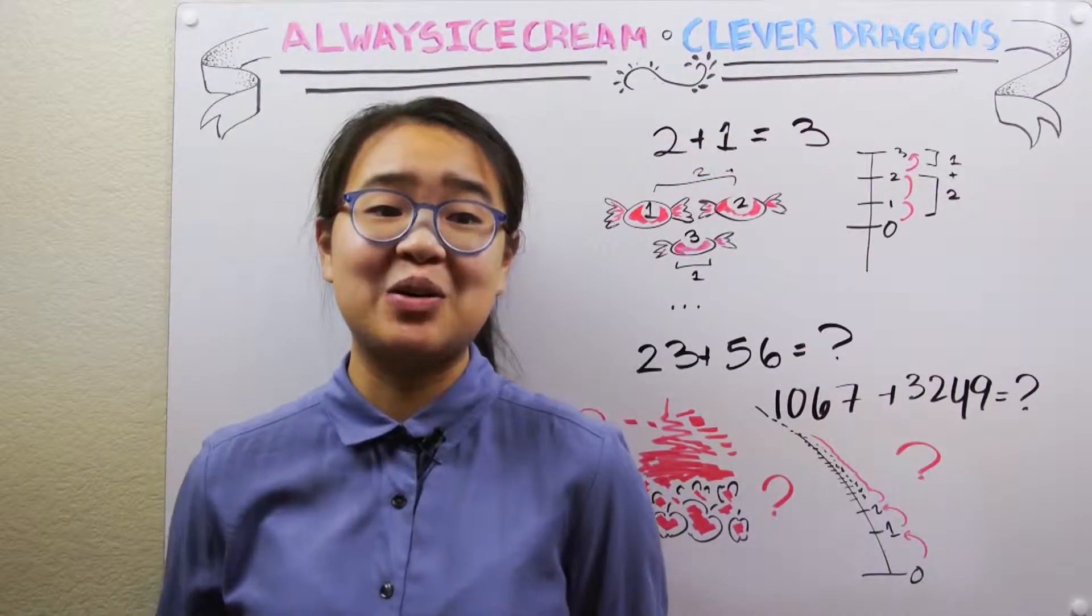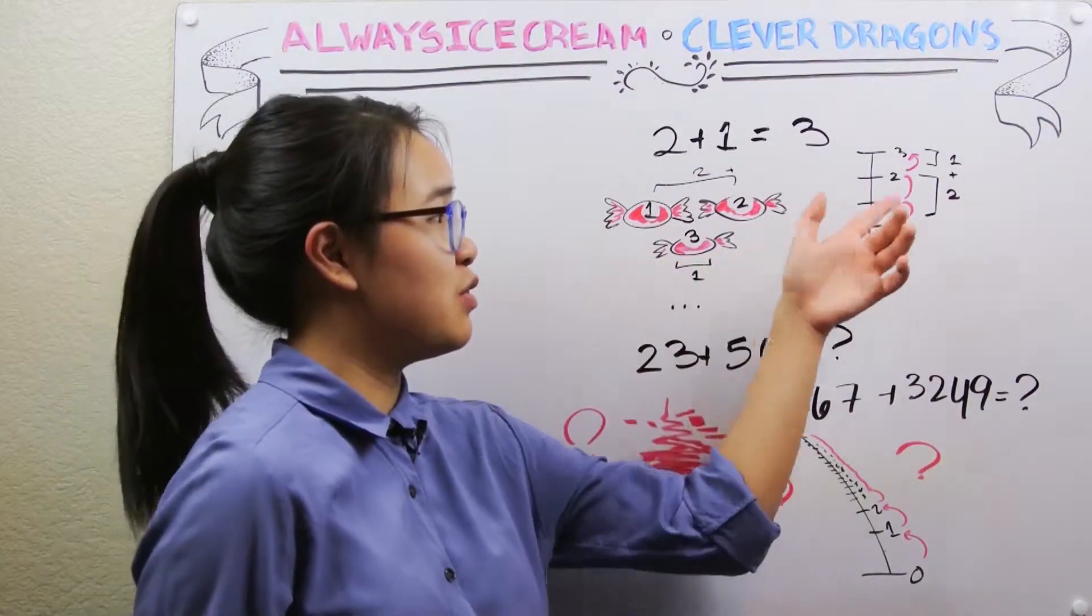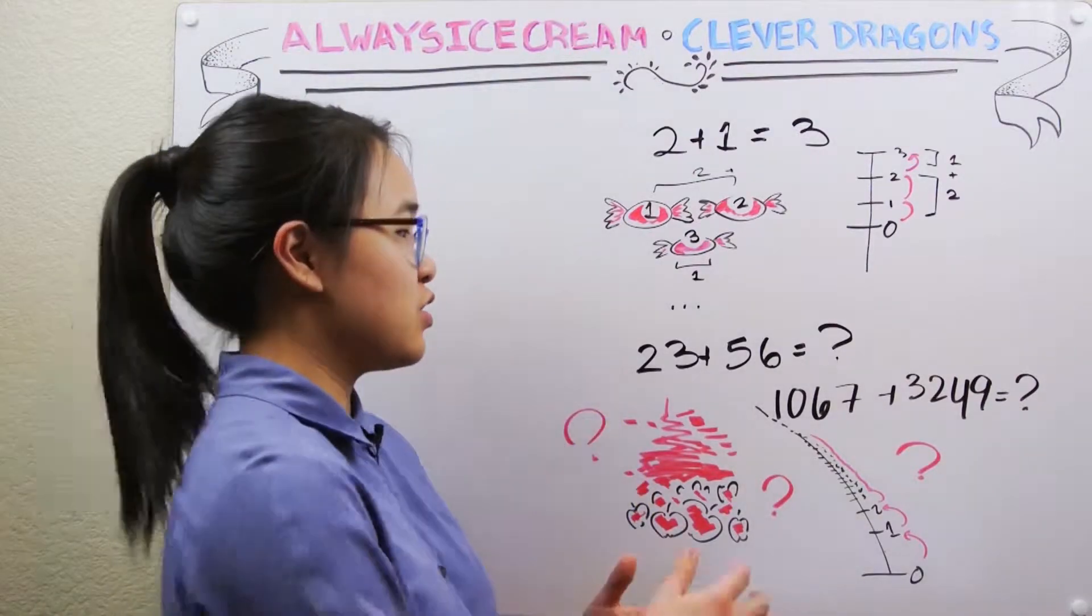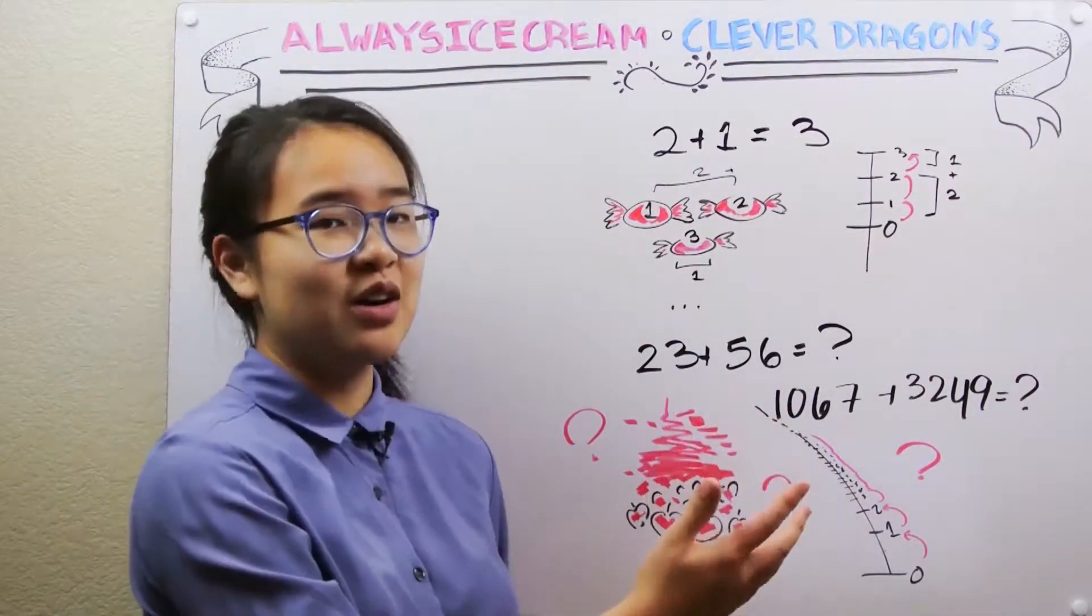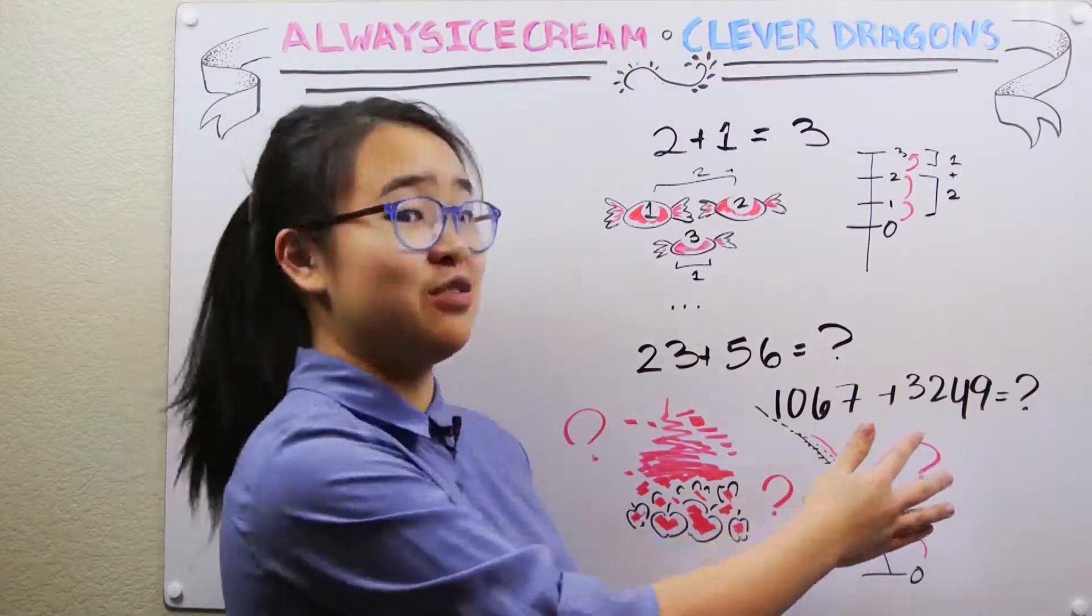So in our last video, we visualized adding up numbers like counting various objects or moving certain steps up the number line. But what if we wanted to add slightly larger numbers, say 23 plus 56, or 1067 plus 3249?